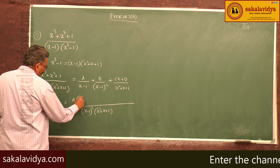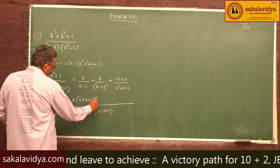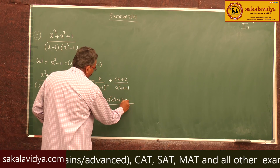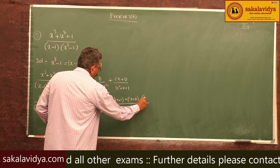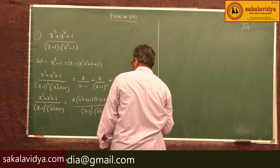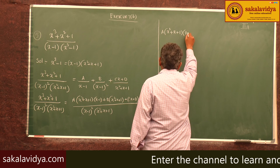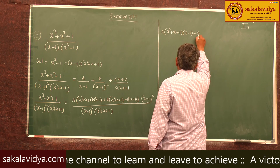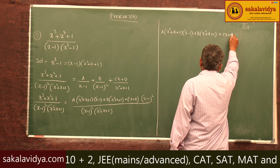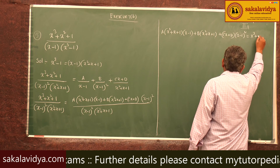Multiplying both sides by (x-1)²(x² + x + 1), we get: x³ + x² + 1 = A(x-1)(x² + x + 1) + B(x² + x + 1) + (Cx + D)(x-1)².